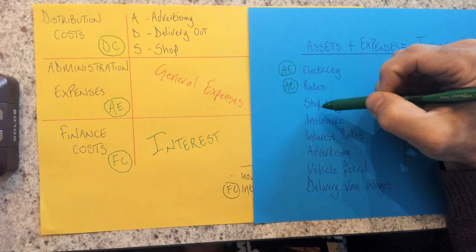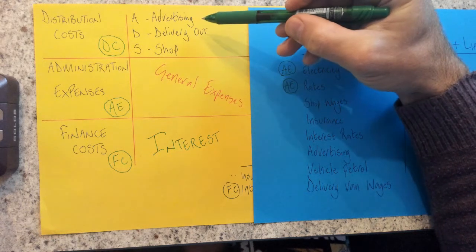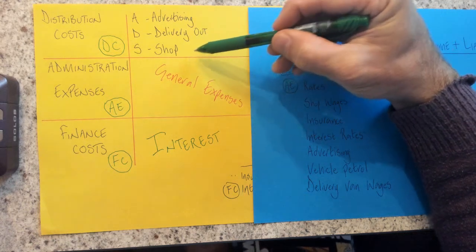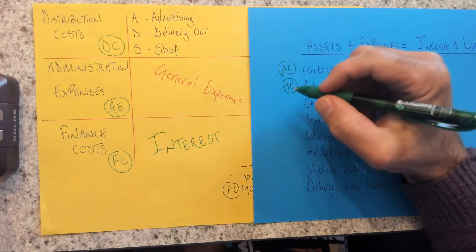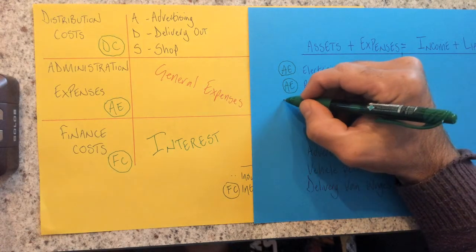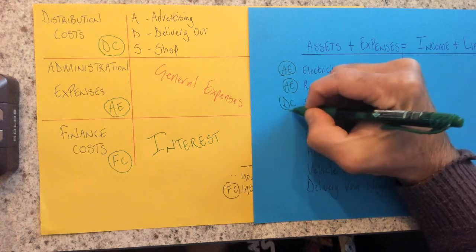Our shop wages. Anything to do with advertising, delivery, or shop? Yes, it is. It's got directly to do with paying the people within the shop, and earning us our main form of income. So therefore, this becomes the distribution cost.